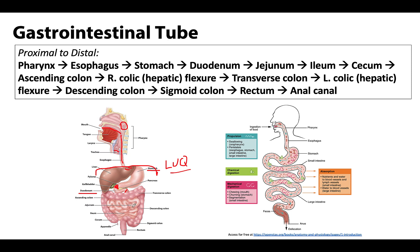The transition between the jejunum and the ileum is not going to be visible externally — you can't really tell where it changes, and even microscopically it's a little difficult. So we always say if we're going to label the jejunum we put it well in the left upper quadrant, whereas the ileum would be well in the right lower quadrant to tell the difference between the two. The ileum will transition into the cecum at the ileocecal junction. The cecum is the most proximal portion of the large intestine, with the vermiform appendix associated with it, all in the right lower quadrant.